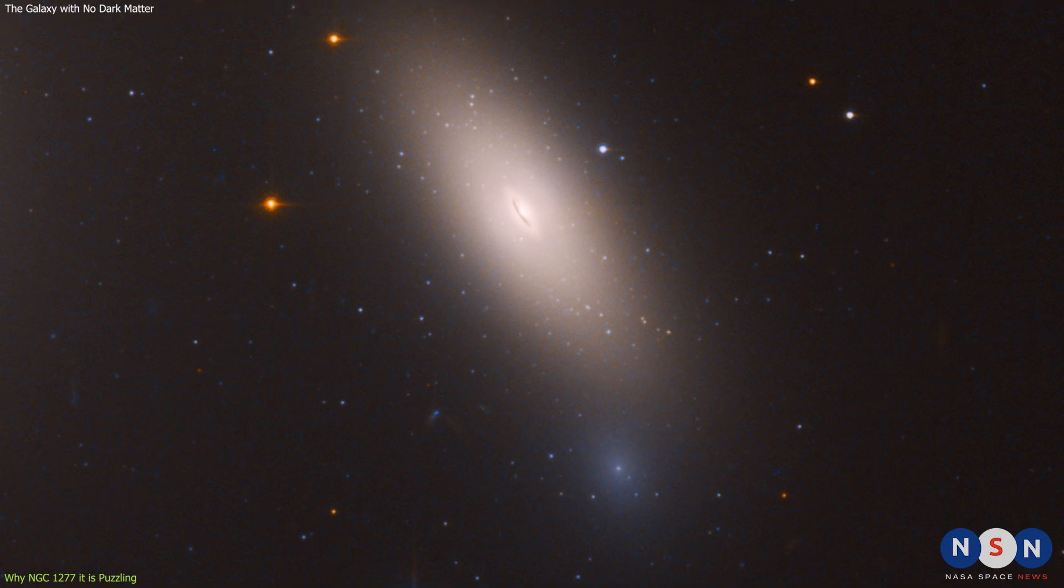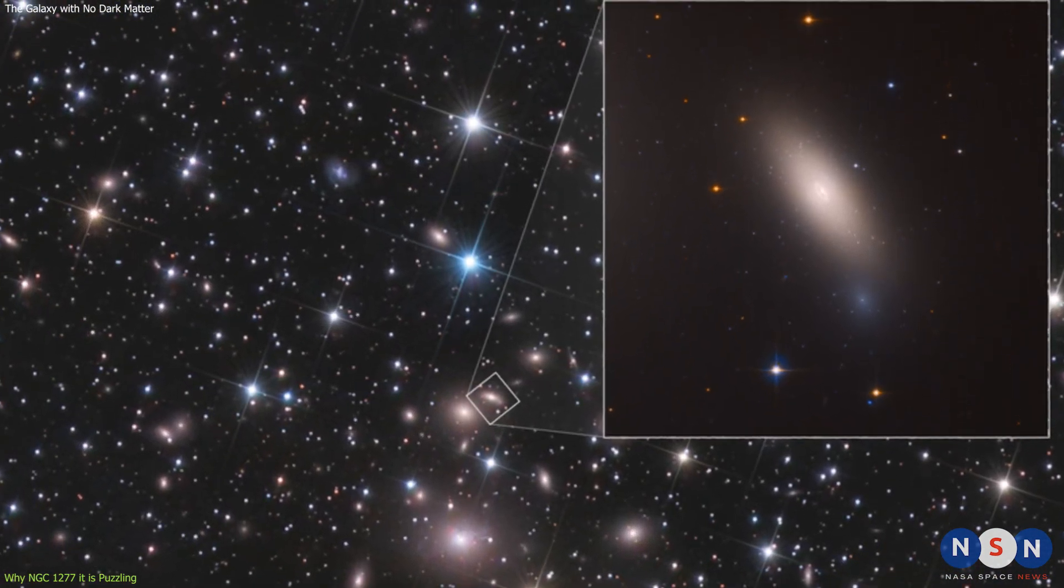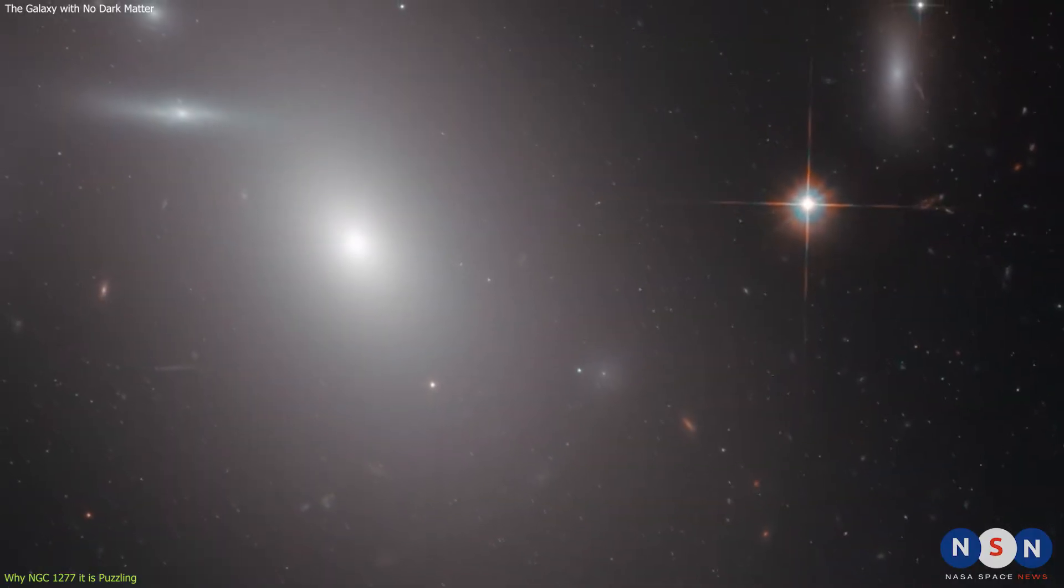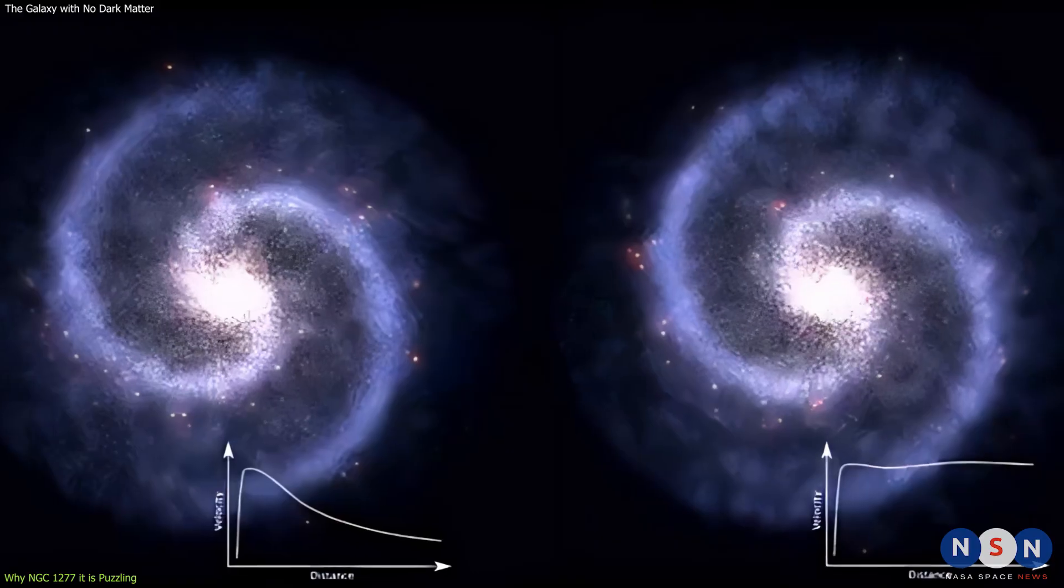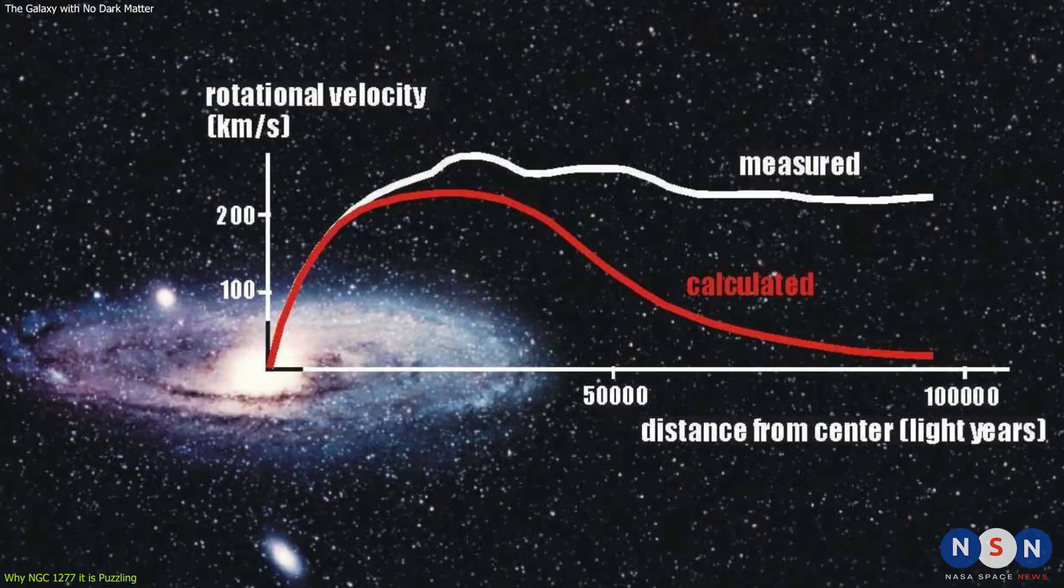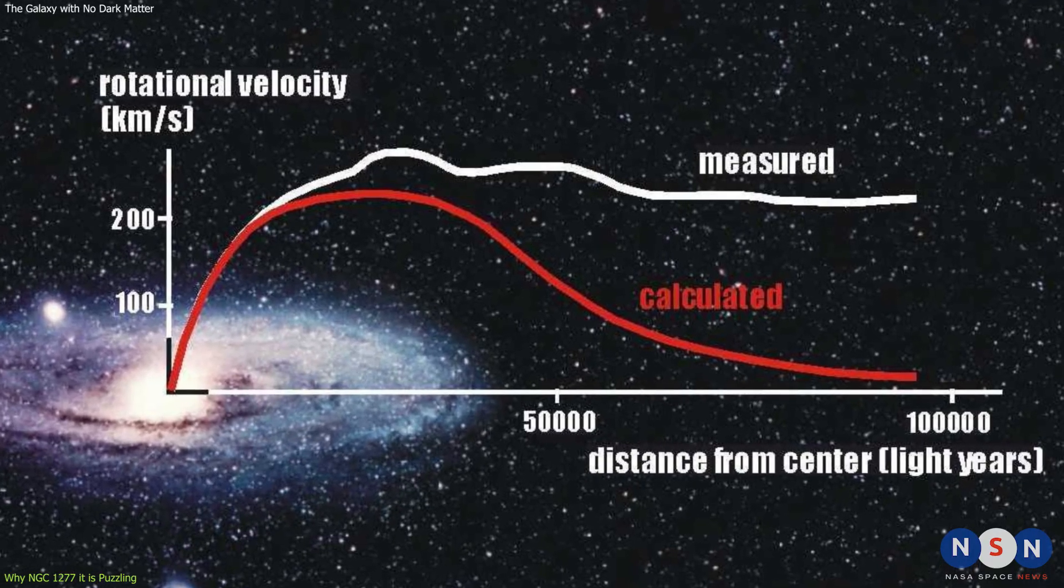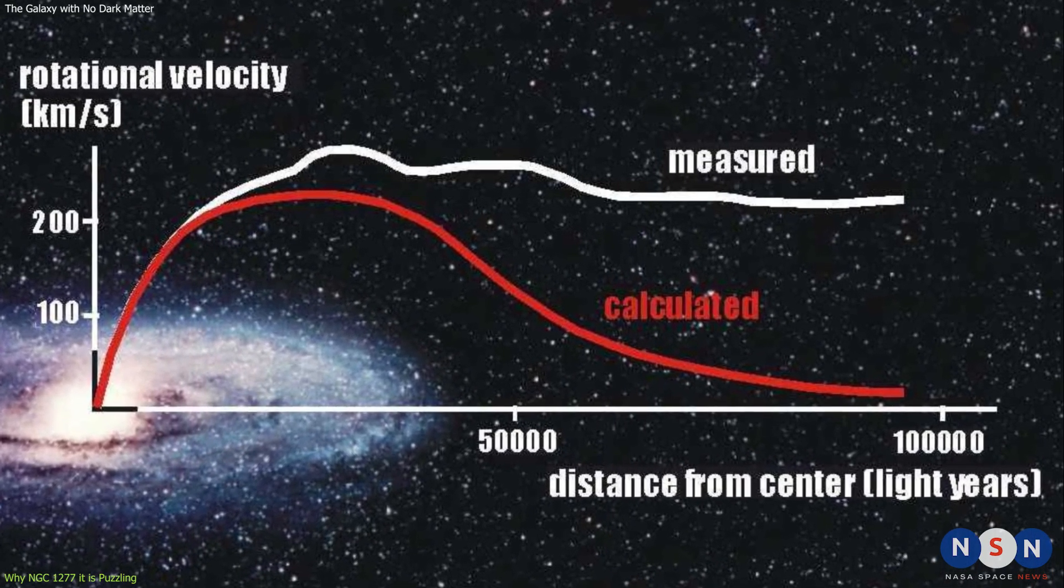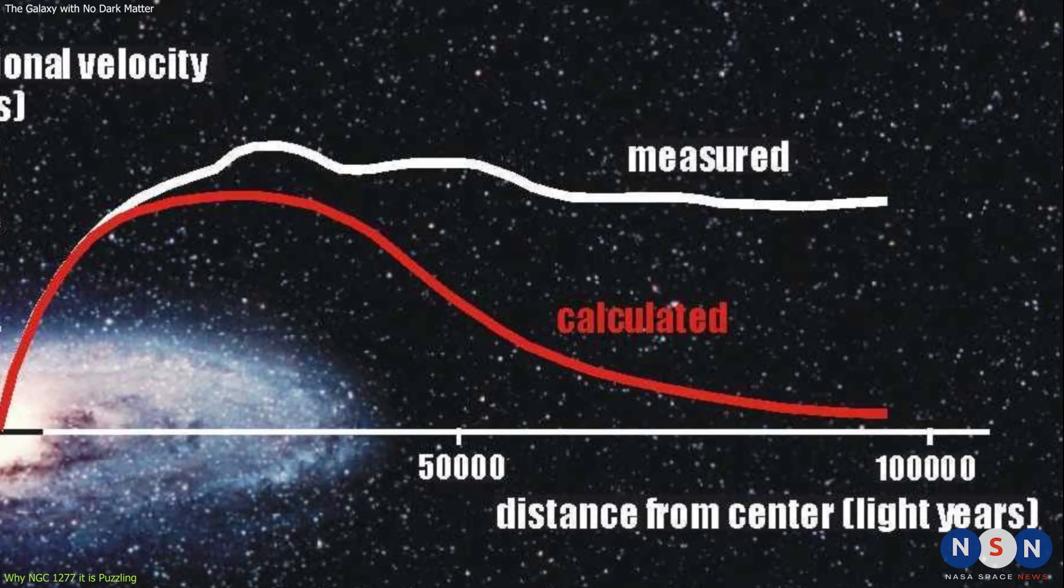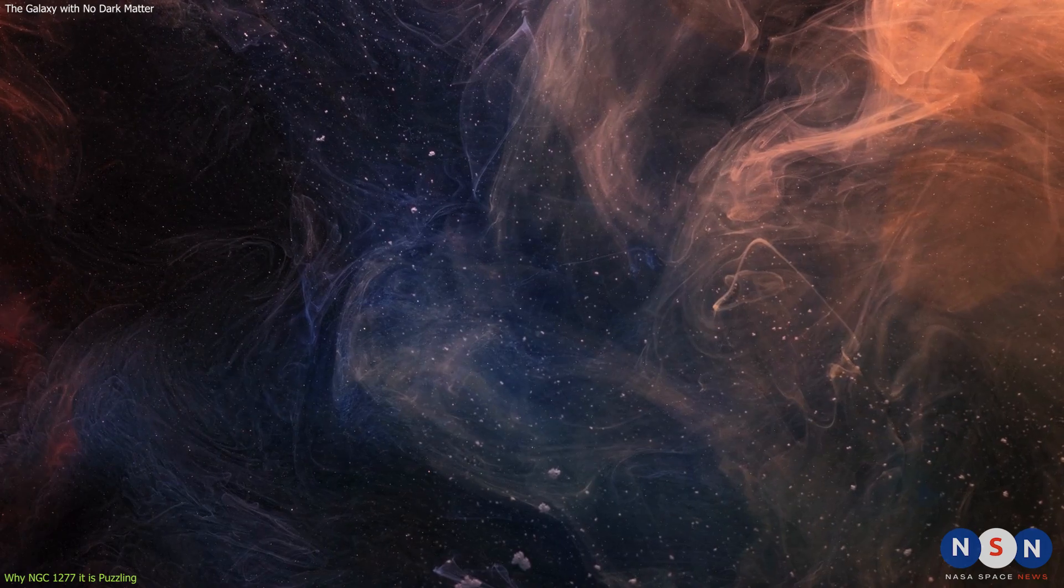But what makes this galaxy truly remarkable is that it has no dark matter, at least not within its observable radius of 20,000 light-years. This was revealed by measuring its rotation curve using MUSE. Unlike other galaxies that have flat or rising rotation curves due to dark matter halos, this galaxy has a declining rotation curve that matches exactly its visible mass distribution. This means that there is no evidence for any extra mass beyond what we can see in stars and gas.